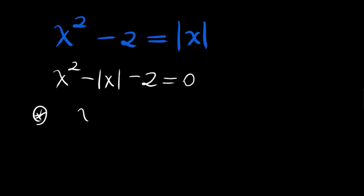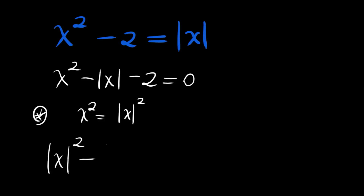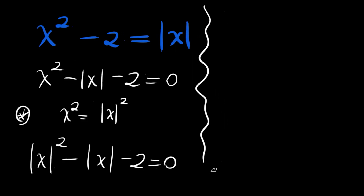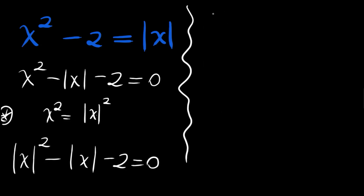Note that x squared can be expressed as absolute value of x squared, since both sides are positive. So our equation can be written as absolute value of x squared minus absolute value of x minus 2 is equal to 0. We can call absolute value of x equal to a.